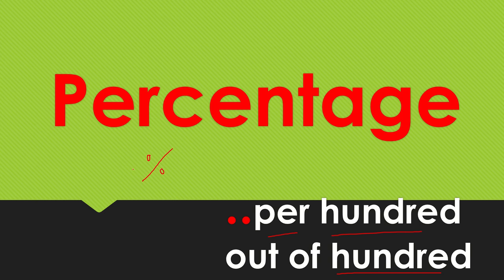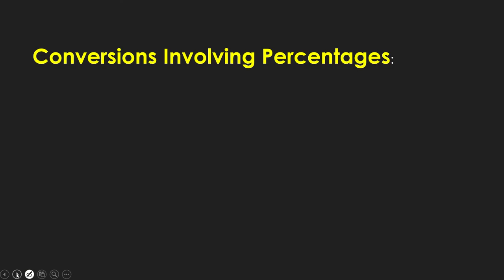So a percentage is a fraction, which means 100 is always the denominator. Maybe 5 percent, that means 5 out of 100. Let's go to the math.